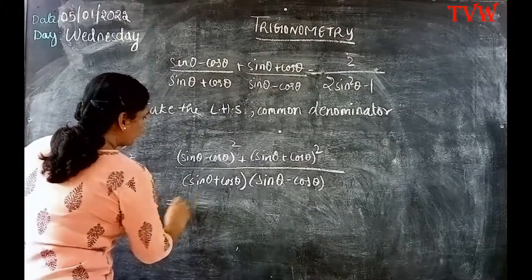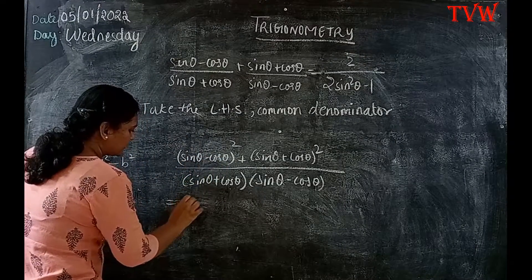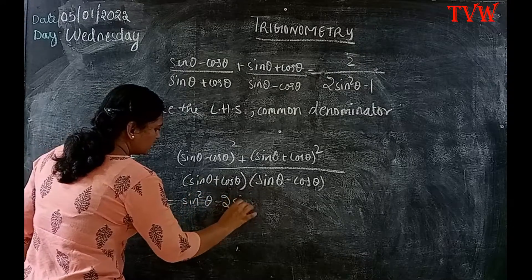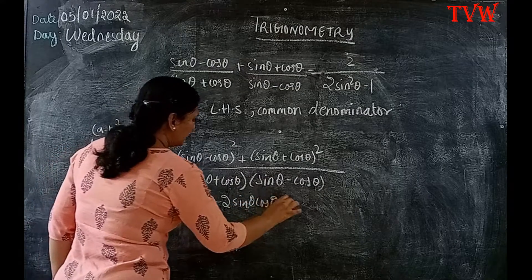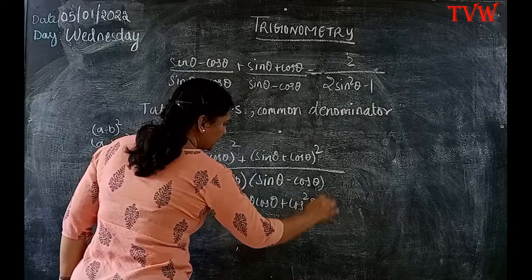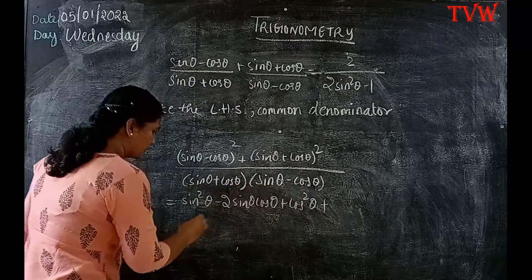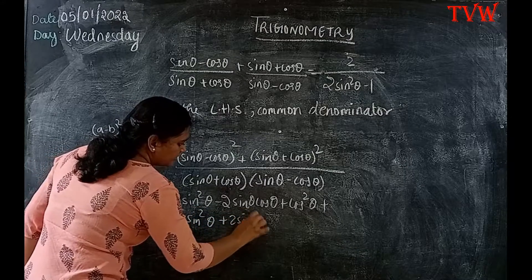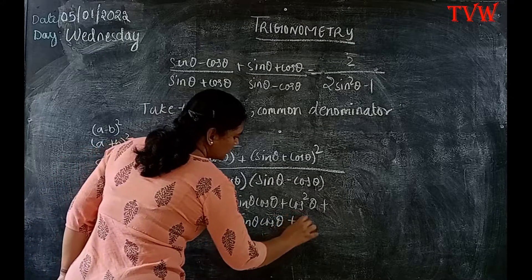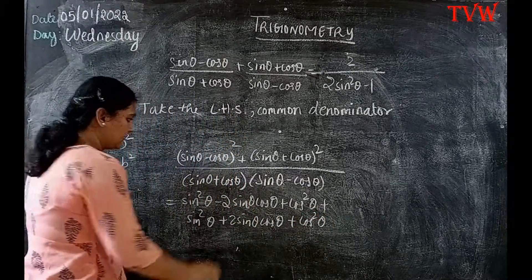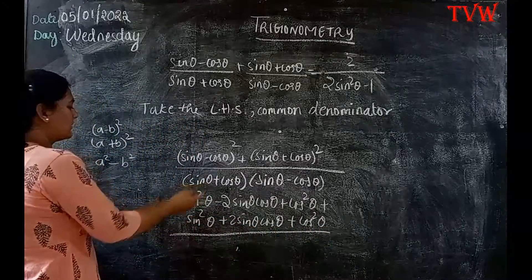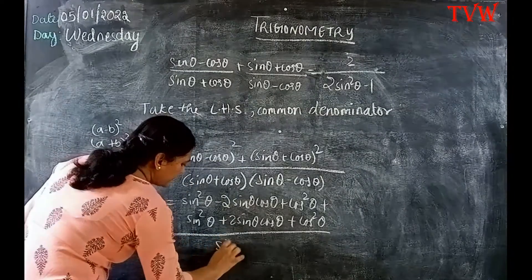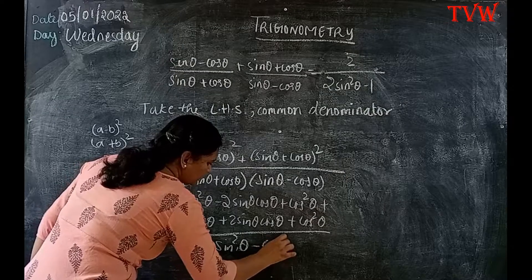So expanding: (sin θ − cos θ)² = sin²θ − 2 sin θ cos θ + cos²θ. And (sin θ + cos θ)² = sin²θ + 2 sin θ cos θ + cos²θ. The whole thing is divided by sin²θ − cos²θ, since (a + b)(a − b) = a² − b².